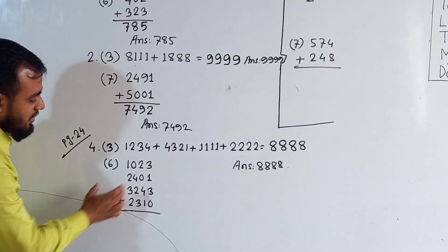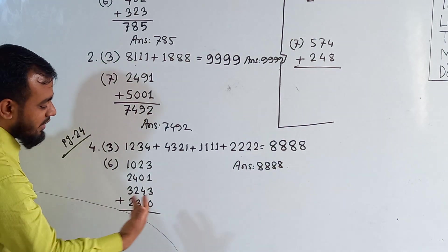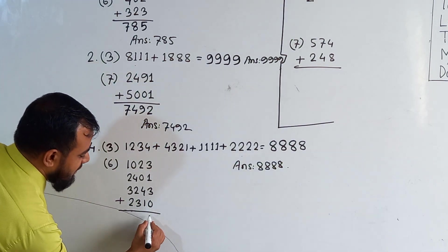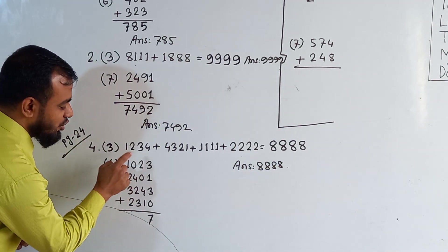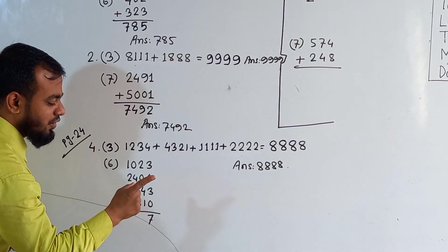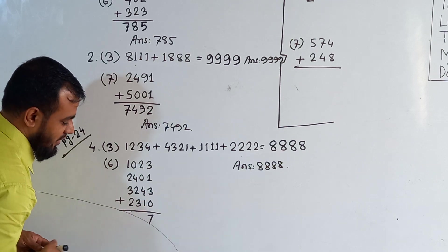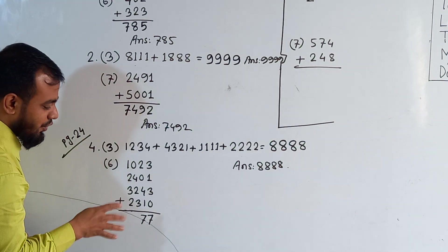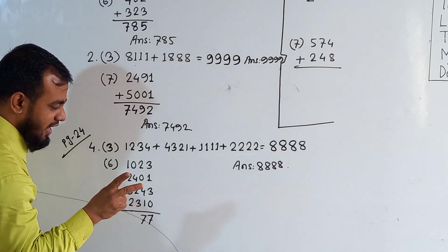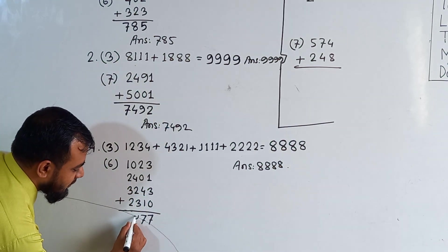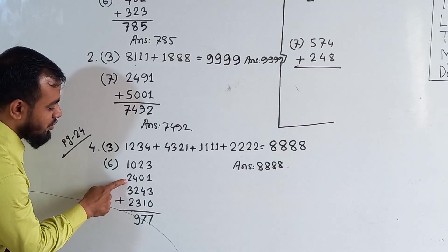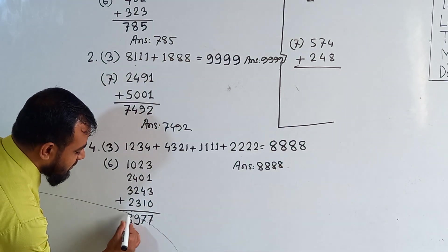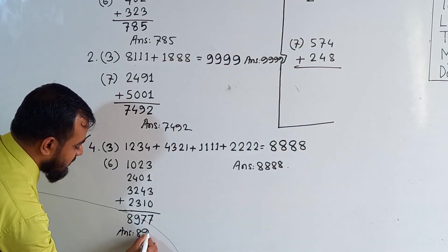Sub-question number 6: we have to add these 4 numbers together. From the right side: in the 1's place, 3 and 1 makes 4, then 4 and 3 makes 7, and 7 and 0 makes 7. In the 10's place, 2 and 0 makes 2, plus 4 makes 6, plus 1 makes 7. In the 100's place, 0 and 4 makes 4, plus 2 makes 6, plus 3 makes 9. In the 1000's place, 1 and 2 makes 3, plus 3 makes 6, plus 2 makes 8. Our answer is 8,977.